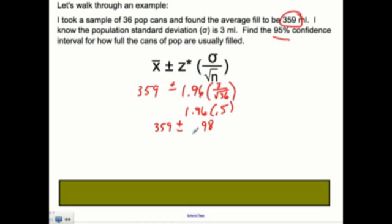How does that break down? Well, I break it down this way. 359 plus the 0.98 and the 359 minus the 0.98, which in turn gives me, on the high end, 359.98.